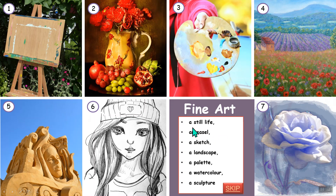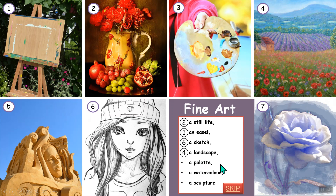Still life is when you paint something which is still. Number two: an easel, used for putting your painting on — it's the stand here. Number one: a sketch is usually in pencil; you can do a quick sketch. Number four: a palette holds the paints. A watercolor is a style of painting — you can use oils or watercolor. A sculpture is a shape made from some material.